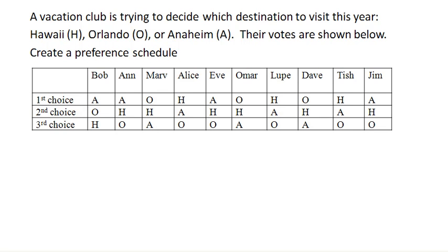We wanted to capture more information than just everyone's first choice, so we didn't ask them to vote for their favorite. Instead, we asked them to rank their choices from first choice, second choice, and third choice — in other words, to give their choices in order.